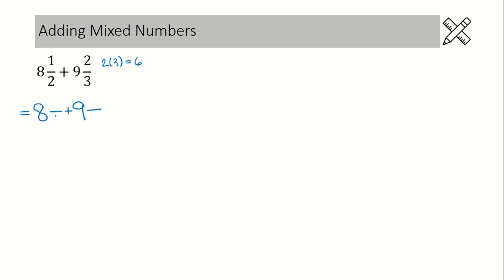So our lowest common denominator is six, which means we write that in now. Next we want to make equivalent fractions. Here we're going from a denominator of two to six, so we're multiplying by three — one times three is three. In our next fraction we're going from a three to a six, so we're multiplying by two — two times two is four. Good, we have common denominators, so now we can add everything up.